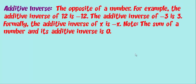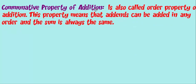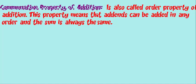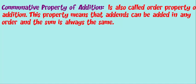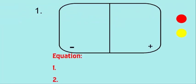The next term is the commutative property of addition, also called the property of order. This property means that addends can be added in any order and the sum is always the same. So let's get started on our example problems. Question number one — we're going to use color chips. You can use circles or whatever you want to model our equation.